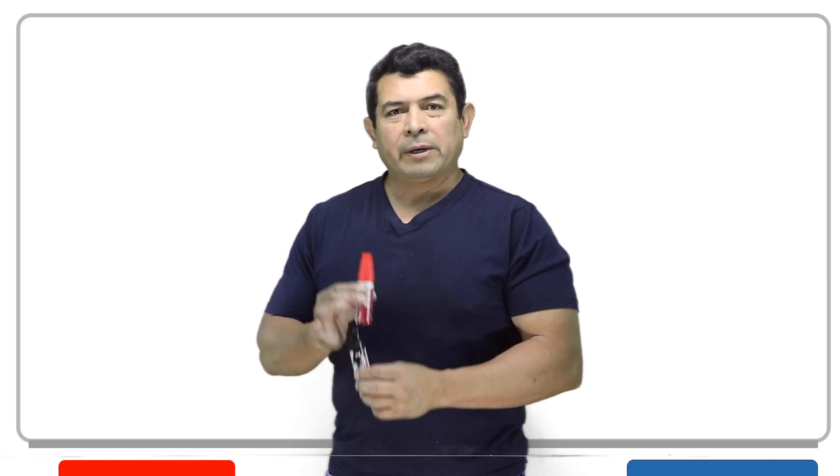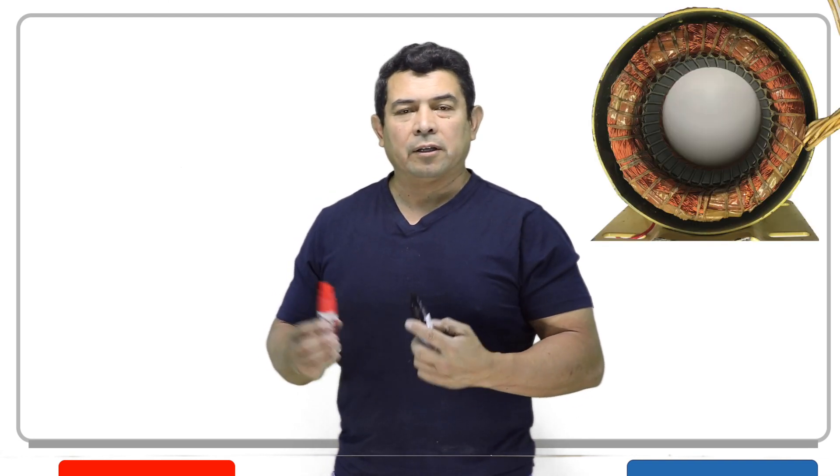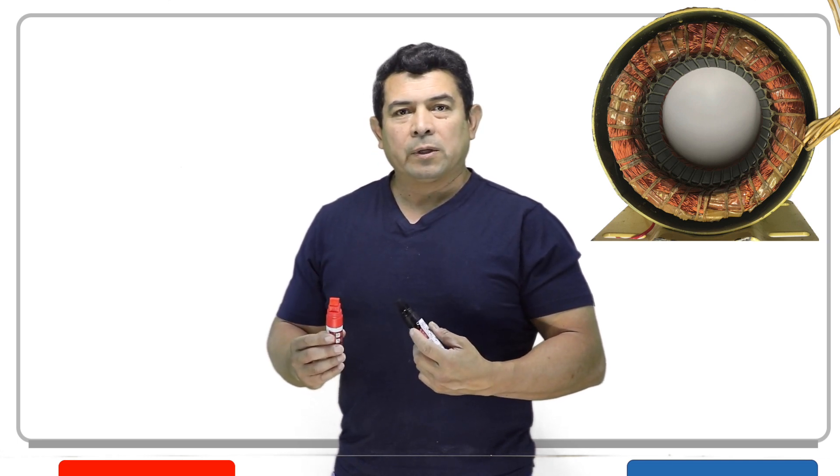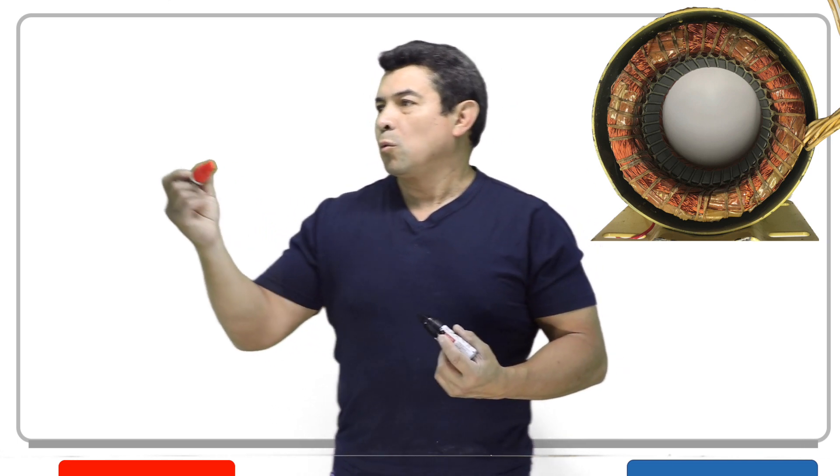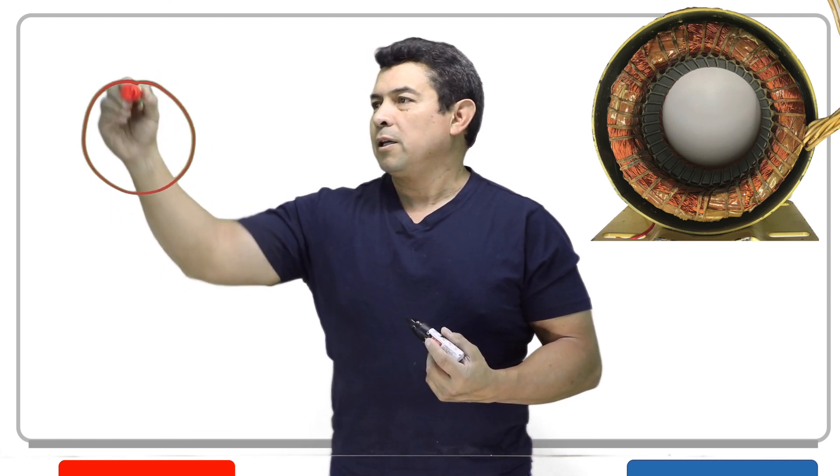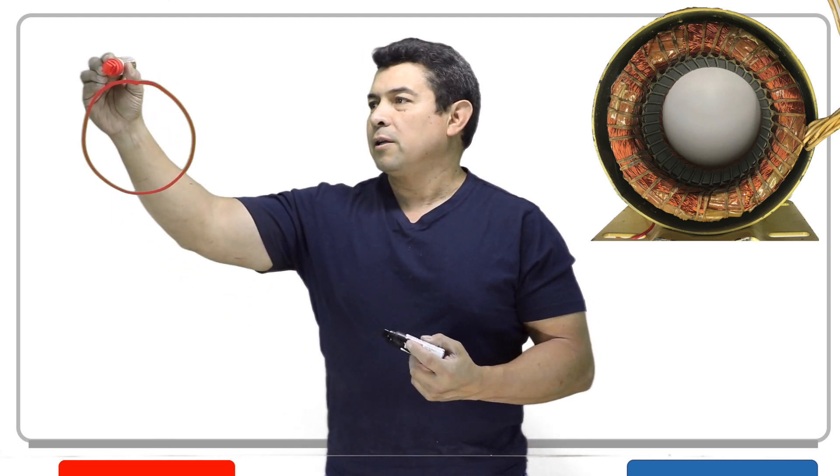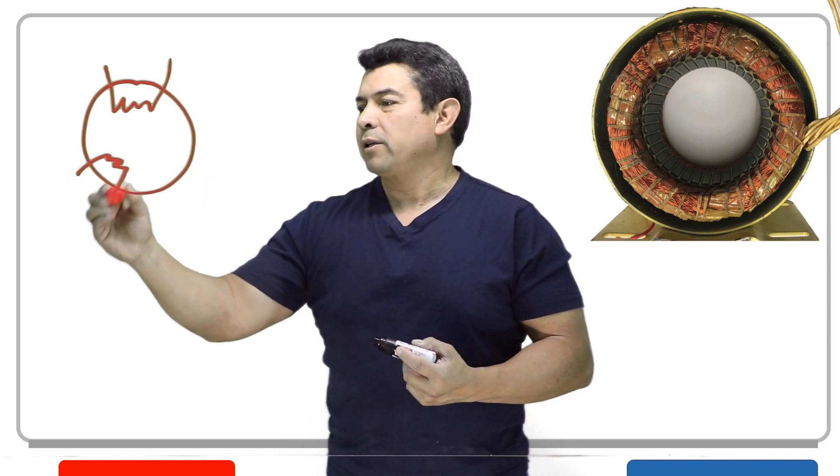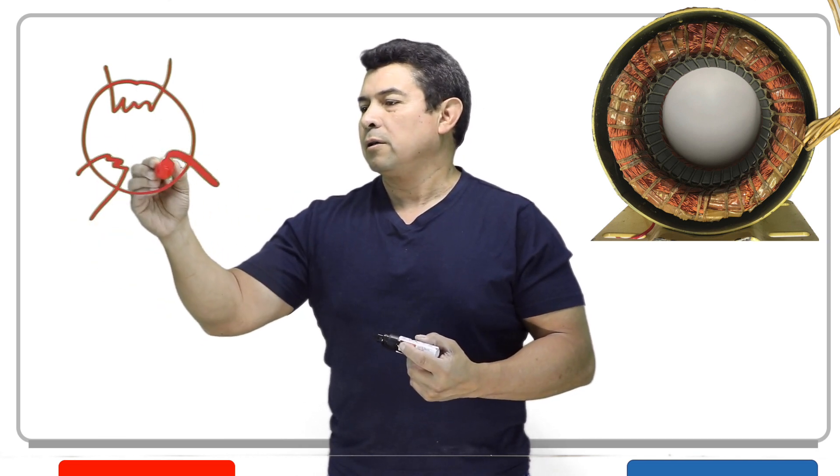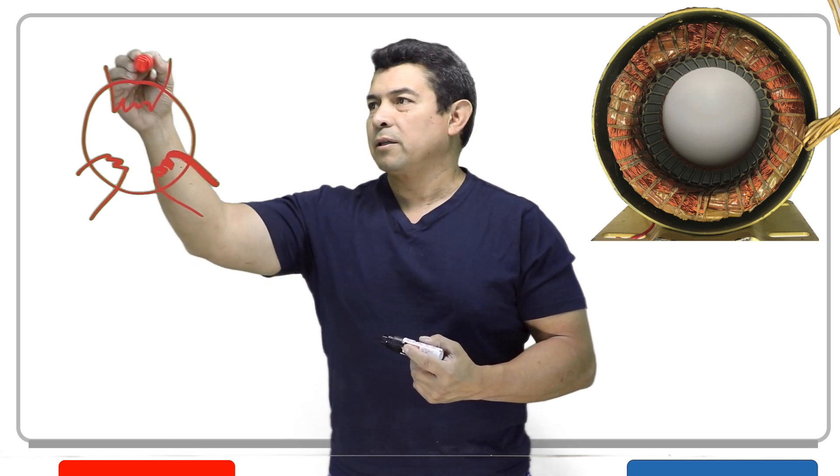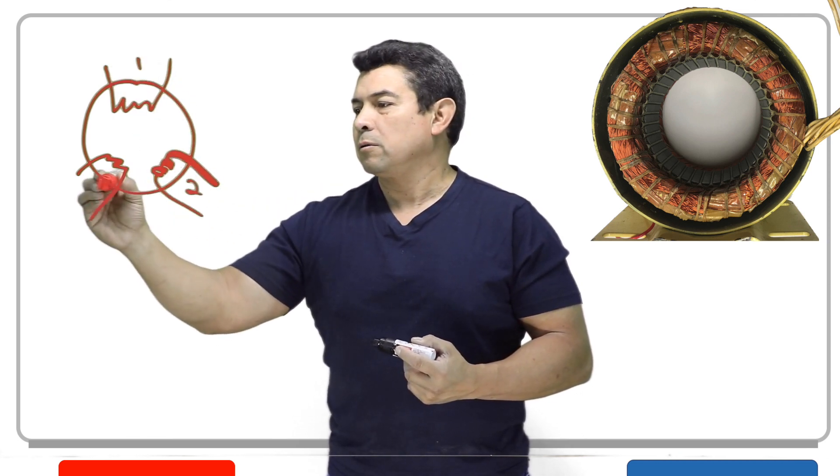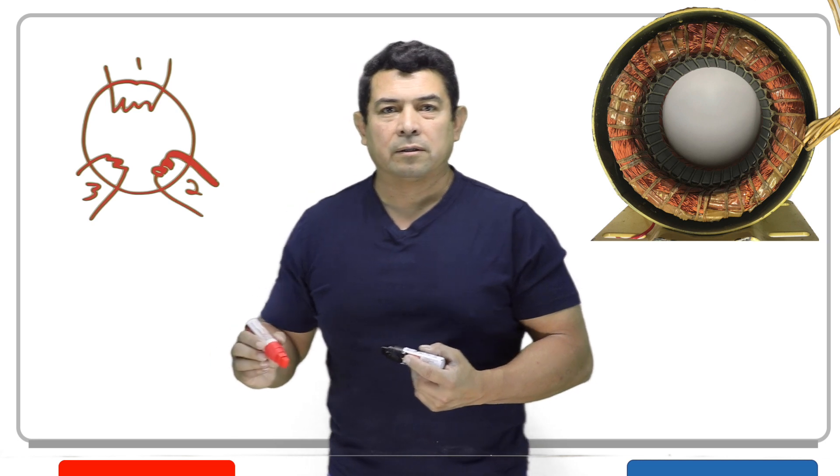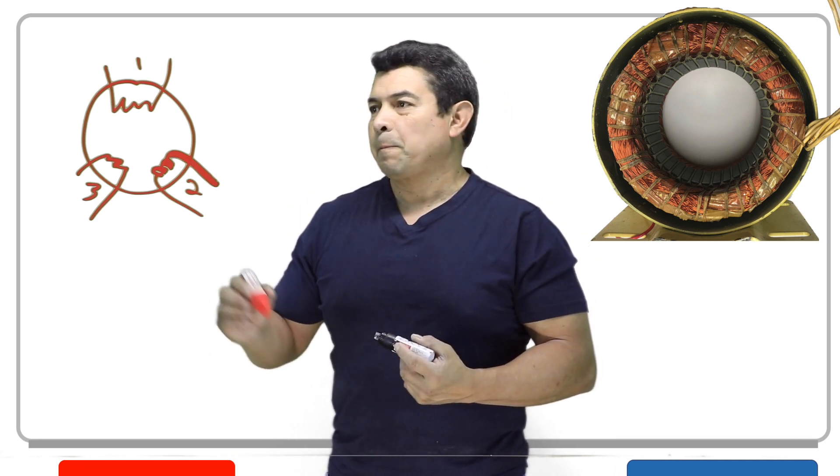But today what I wanted to talk about was actually the windings in the motor. In a motor, we're going to have the casing like this, and inside the casing you're going to have a winding like this, another winding like this, and another winding like that. So we basically have one, two, three windings on the motor like this.